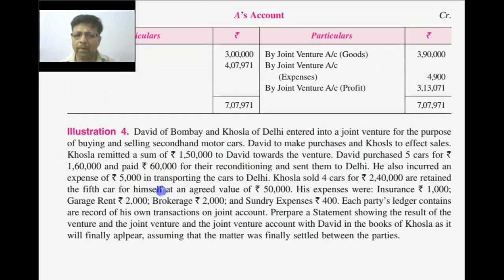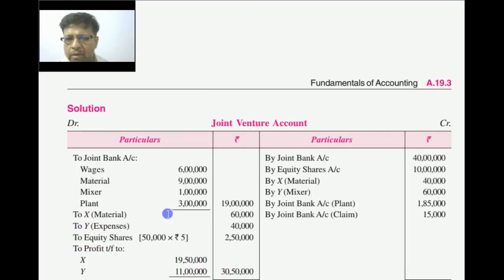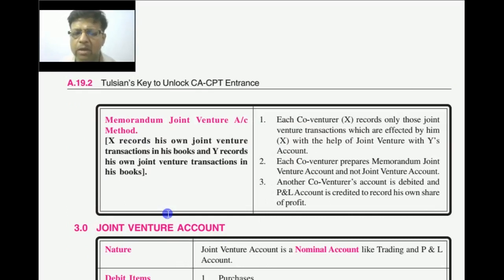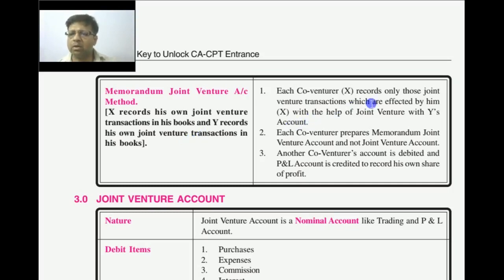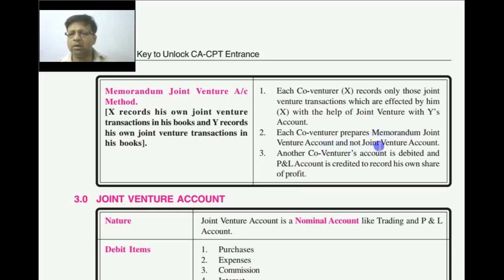This is the third pattern — the memorandum joint venture account method. In this pattern, each party's ledger contains a record of his own transactions. In this case, we prepare a common account called the memorandum joint venture account. X records his own joint venture transactions in his books and Y records his own. This memorandum account is not a formal ledger account — it is just a statement. In statement form, we represent this most commonly used method.